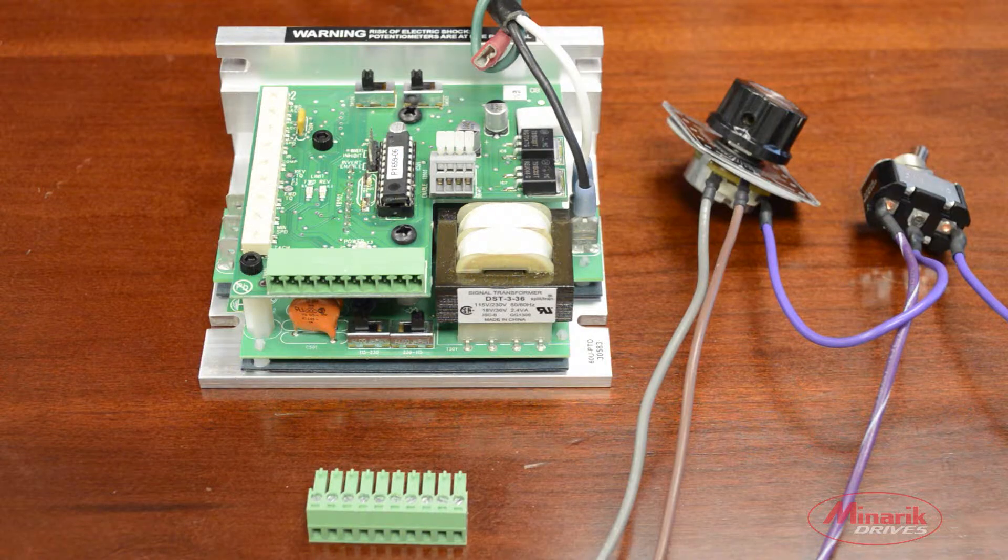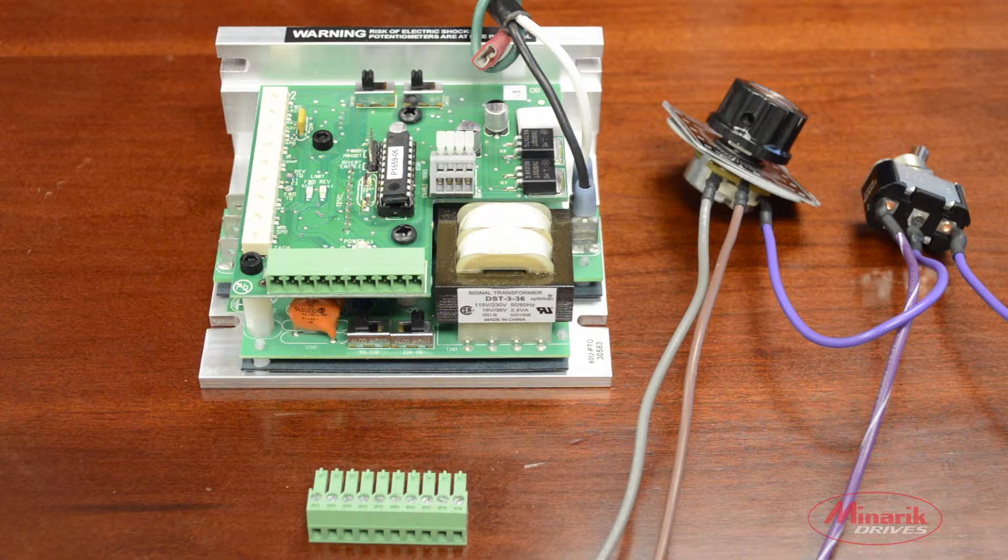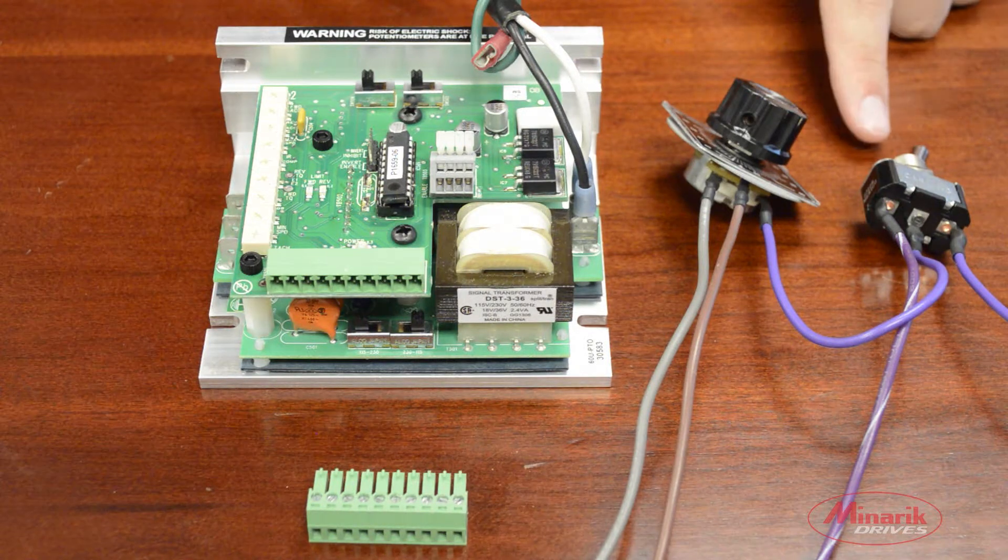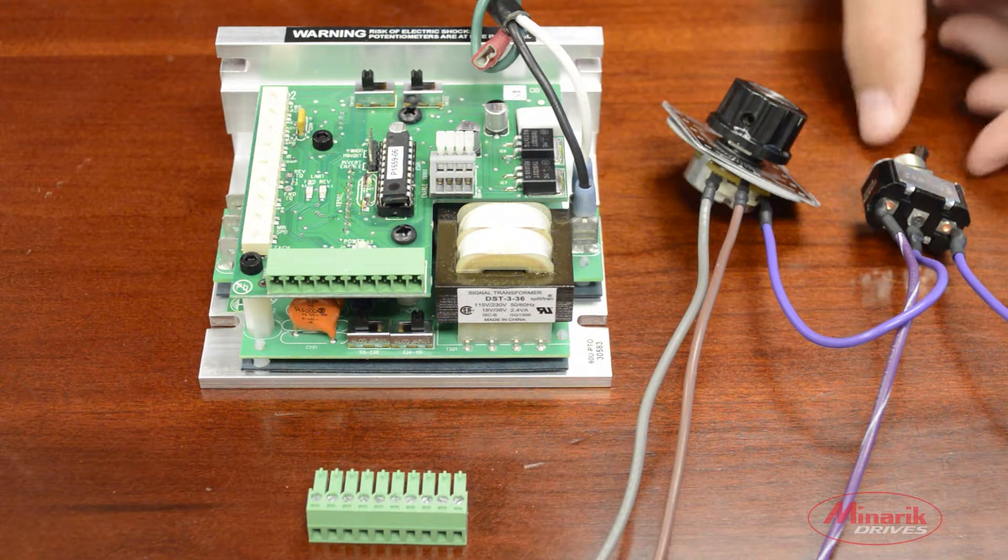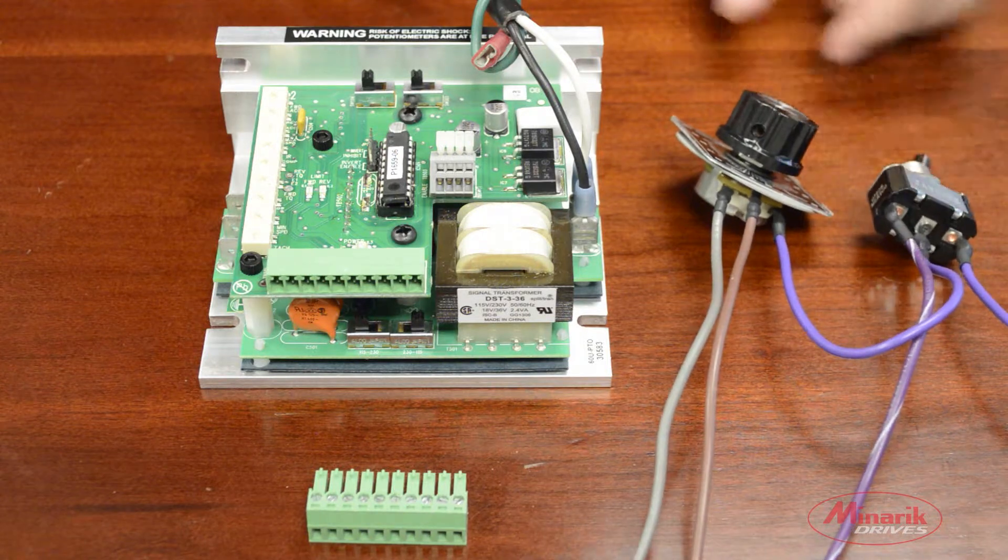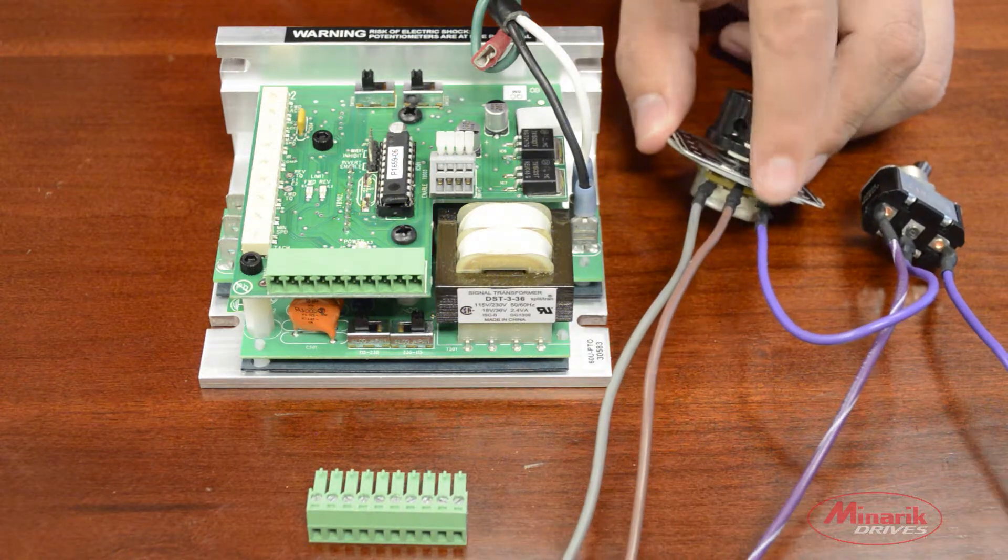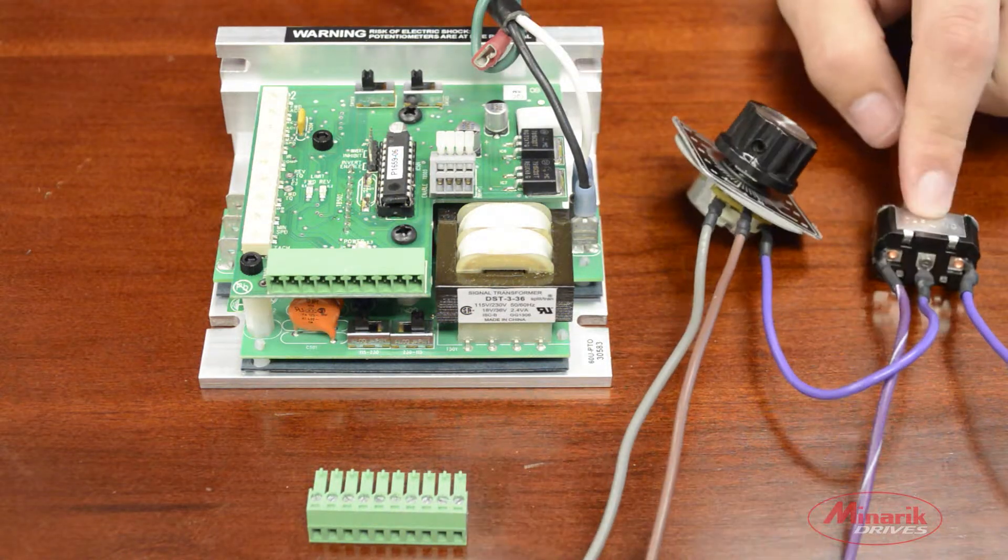The last configuration we're going to show is how to control the different directions independently using a direction switch. You're going to need a single pole double throw switch. On the potentiometer, the positive lead will be connected to the common lead of the switch.